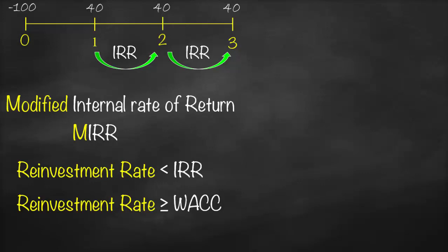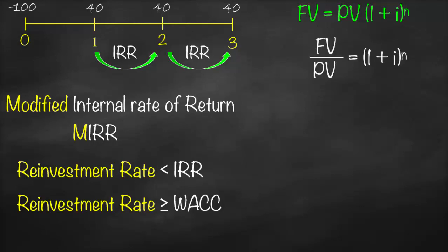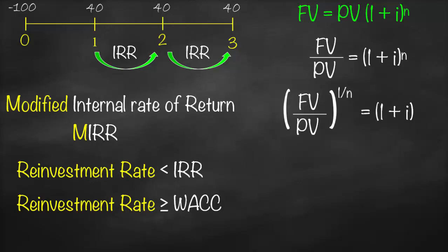How do we get the formula for MIRR? The formula comes from the time value of money. Remember the future value of a single cash flow: Future Value equals Present Value multiplied by (1 + i) to the power n. We rearrange this formula to isolate i. Dividing both sides by Present Value gives Future Value divided by Present Value equals (1 + i) to the power n. To remove the exponent n, we raise both sides to the power 1/n, giving (FV/PV)^(1/n) = 1 + i. Subtracting 1 from each side: i = (FV/PV)^(1/n) − 1.